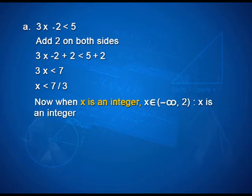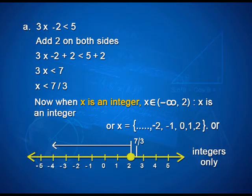When x has to be expressed in terms of an interval and x is an integer, x belongs to the open interval minus infinity to closed bracket at 2. The interval is closed at 2 because the integer on the left hand side of 7 by 3 is 2 and it is included. In set form, the solution is expressed as shown on the screen. On the number line, we have a colored circle at point 2 and the arrowhead pointing on the left hand side.